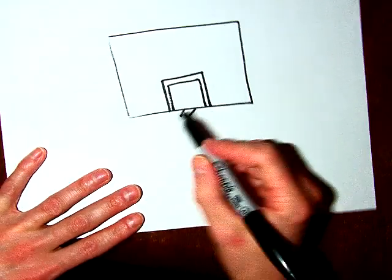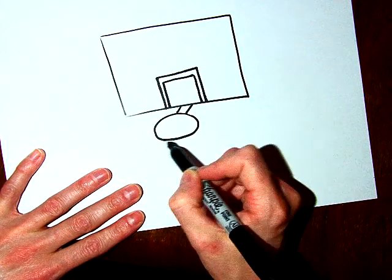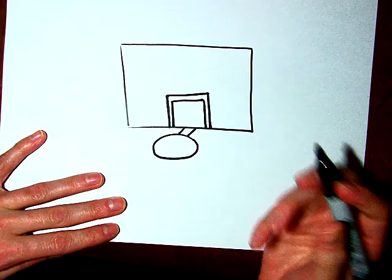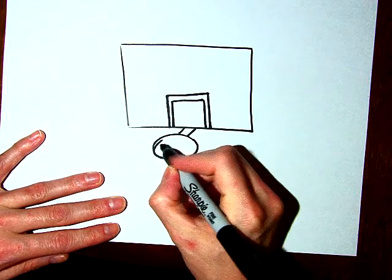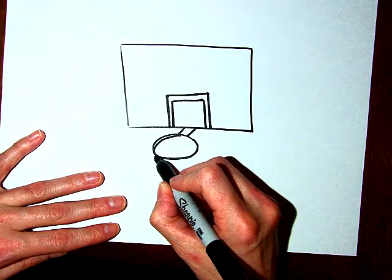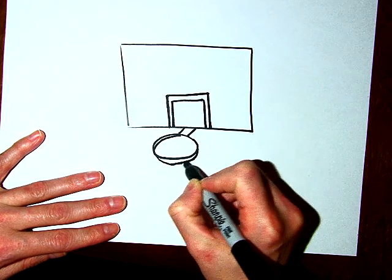Now the hoop is an oval, and more of it is going to be on this side than on that side. And then we're going to give that oval some thickness. So in the back, underneath, give the line like that. And then in the front, underneath, give that hoop a little thickness.